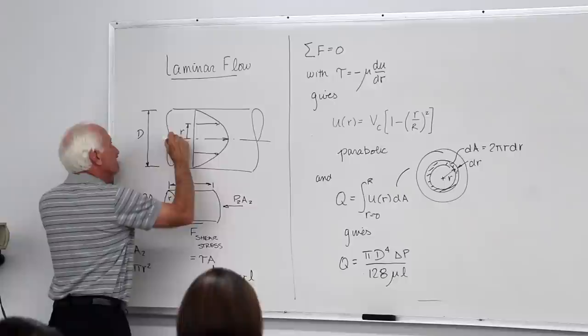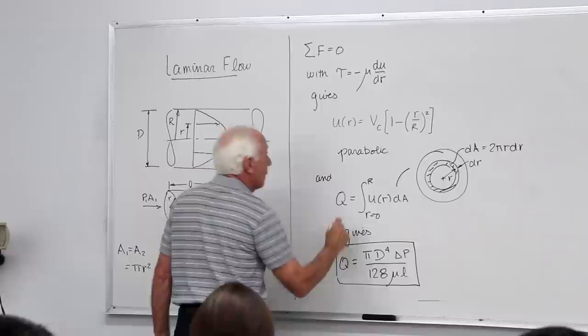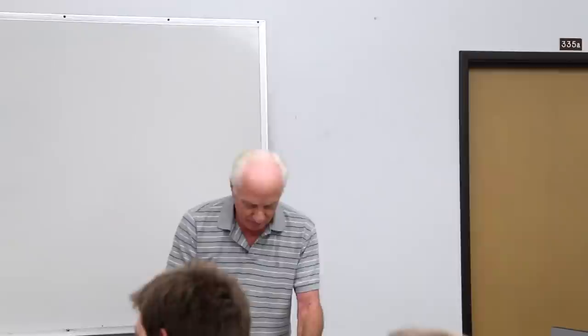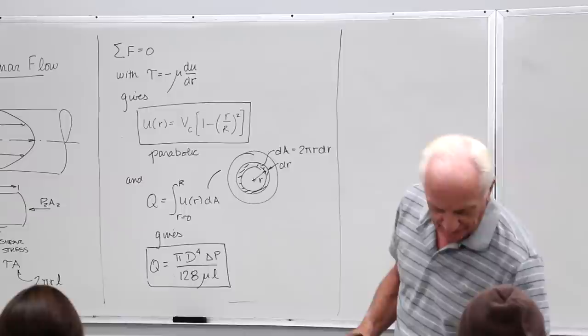We integrated that from the center line, r equals zero, out to the outside radius, capital R. When you do that, you end up with this equation. I think that's about where we left off last time.